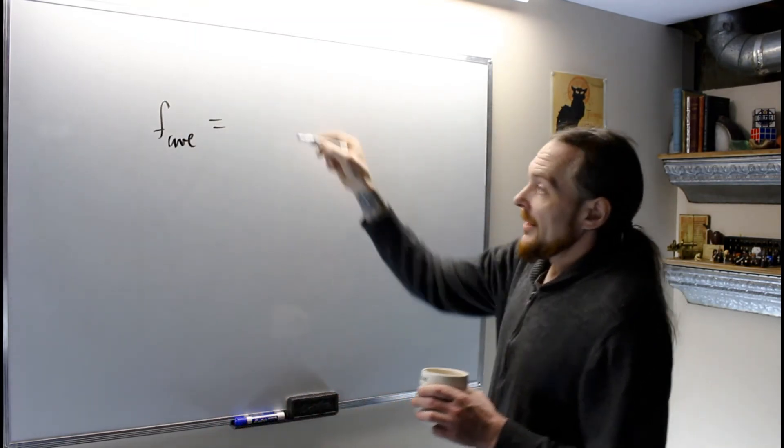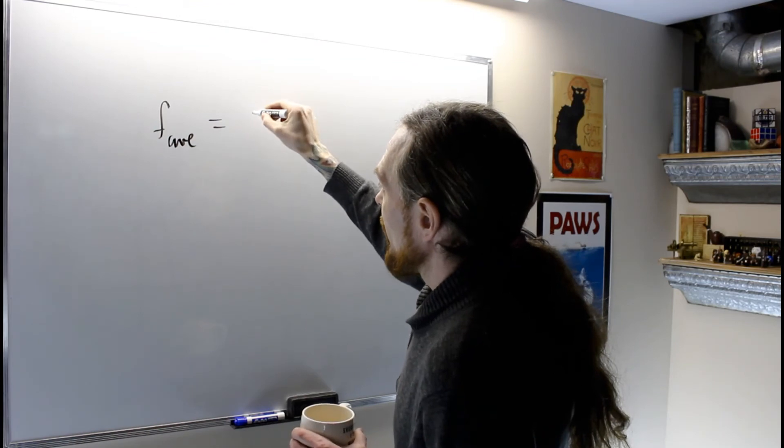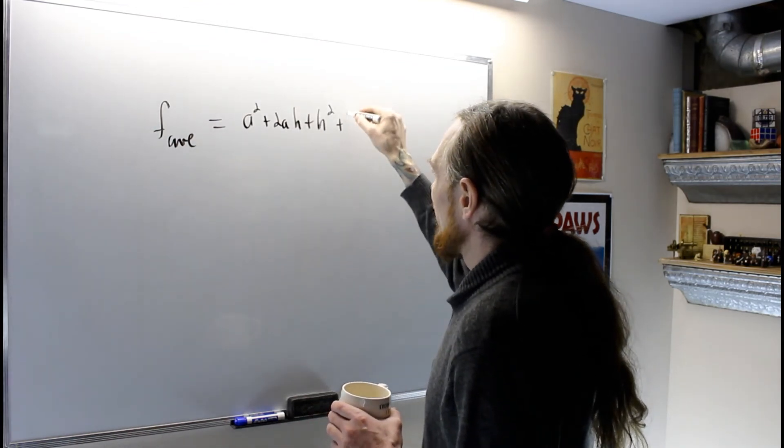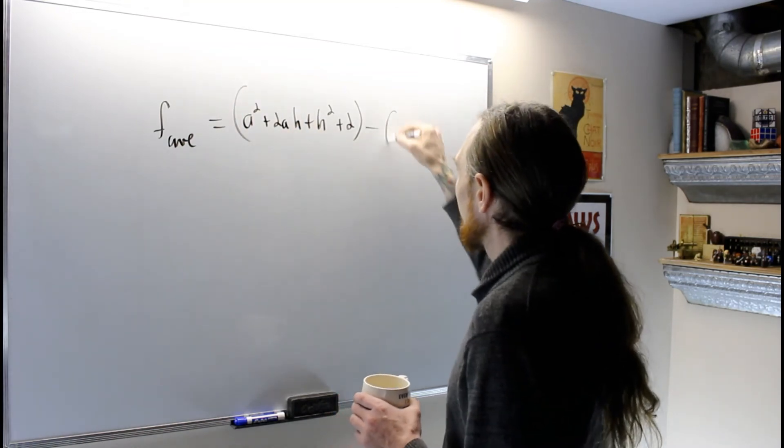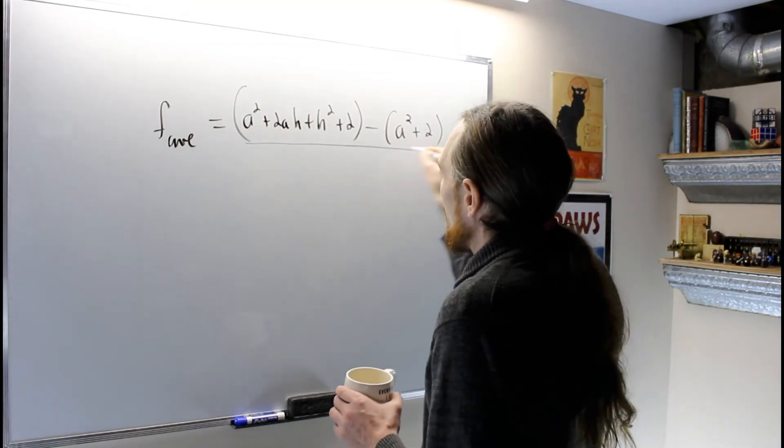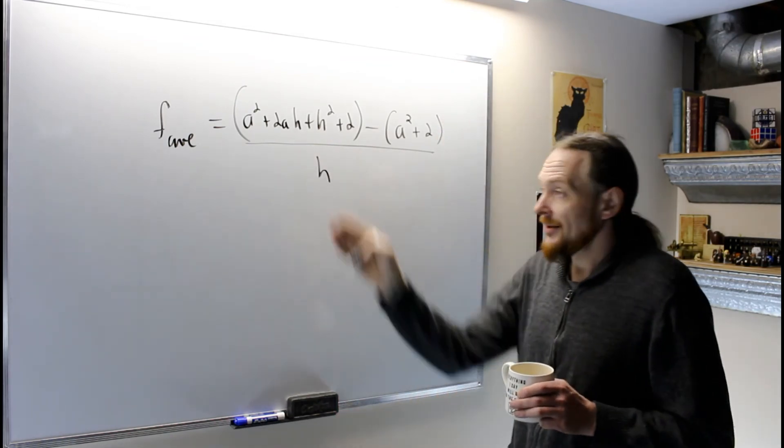F average is f(a+h), which was a² + 2ah + h² + 2, minus f(a), which is a² + 2, all over h because we canceled the a's.